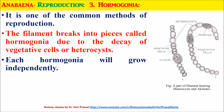The third method is hormogonia. It is a common method of reproduction. The filament breaks into pieces called hormogonia due to the decay of vegetative cells or heterocysts. Hormogonia are the small pieces of a trichome, and each hormogonium will grow independently.